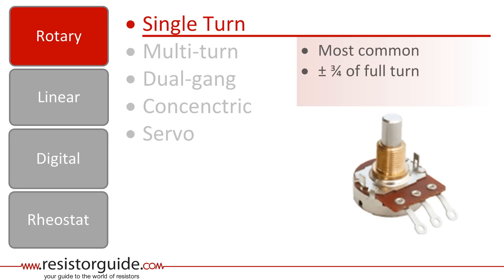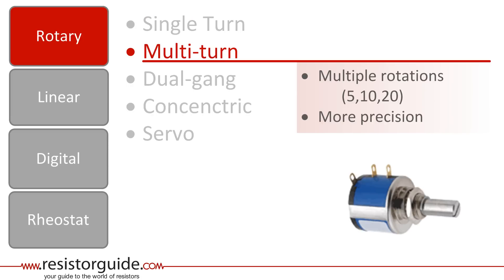Potentiometers are constructed in many different ways. I will shortly go through the main variations. The most common type are the rotary ones. The single turn pot is the most common rotary pot, and can usually rotate three-quarter over full turn. The multi-turn can make multiple rotations — 5, 10 and 20 are the most common. Because of the longer travel, the precision is higher.